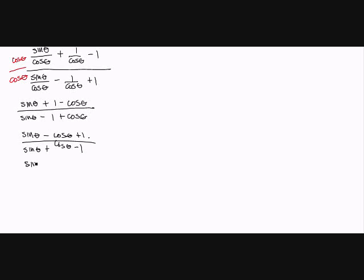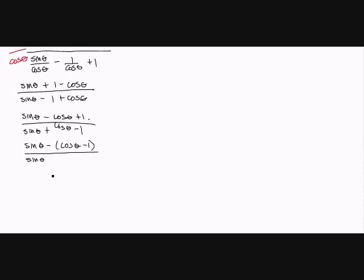I'm going to take a negative out of this numerator. So that gives me negative times cosine theta minus 1, leaving sine theta minus that quantity. The reason I did that is now my numerator and denominator are nearly the same, except one has plus and one has minus. So I'm going to use the idea of multiplying by a conjugate.